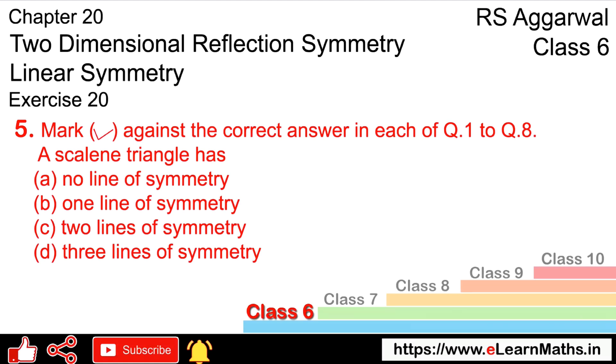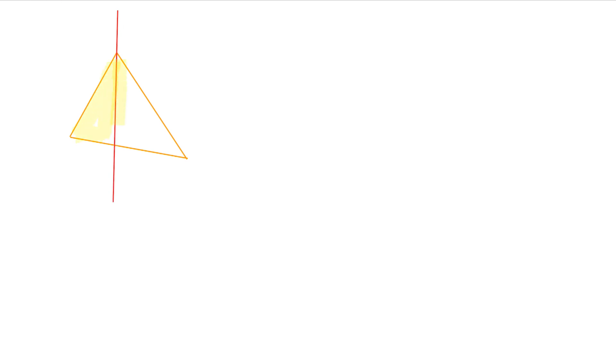Now, the question is asking: a scalene triangle has no line of symmetry, one line of symmetry, two lines of symmetry, or three lines of symmetry? Look at the scalene triangle — this line is not equal. So if we draw such a line of symmetry, this portion is not equal.